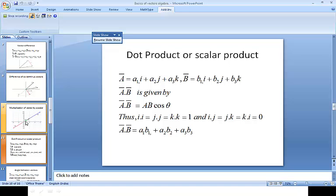Now the dot product or scalar product of vectors. If A is a1i + a2j + a3k and B is b1i + b2j + b3k, then A·B is given by AB cos θ, where θ is the angle between the vectors. Thus i·i = j·j = k·k = 1 as the angle between them is zero, and i·j = j·k = k·i = 0 as the angle between them is 90 degrees. Using this, if you multiply A and B, you get finally a1b1 + a2b2 + a3b3.